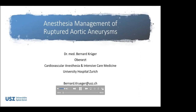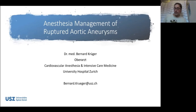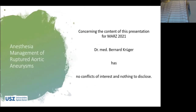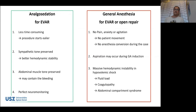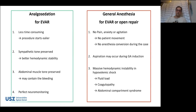Dear MARZ participants and faculty, thank you for the invitation to present anesthesia management of ruptured aortic aneurysms. My name is Bernhard Krueger — I am an anesthetist and intensivist at University Hospital Zurich. I have no conflicts of interest. Anesthesia is part of the multidisciplinary team caring for the patient from entry to the hospital in the resuscitation room through the procedure up to the ICU. For EVAR of a ruptured aneurysm, we use analgosedation. This is less time consuming, lets you start the procedure earlier, the sympathetic tone is better preserved giving more hemodynamic stability, the abdominal muscle tone is preserved possibly containing the bleeding, and we have perfect neuromonitoring of the awake patient.